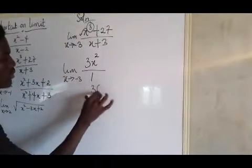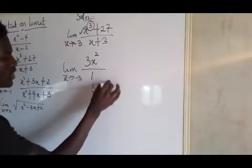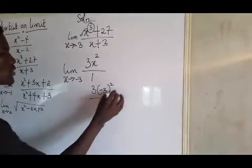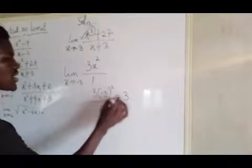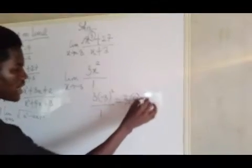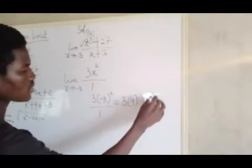Alright. So you now put your limit as x approaches minus 3. And that will be 3 open bracket minus 3 all squared over 1. And that will be 3 times 9. And that means our answer is 27.